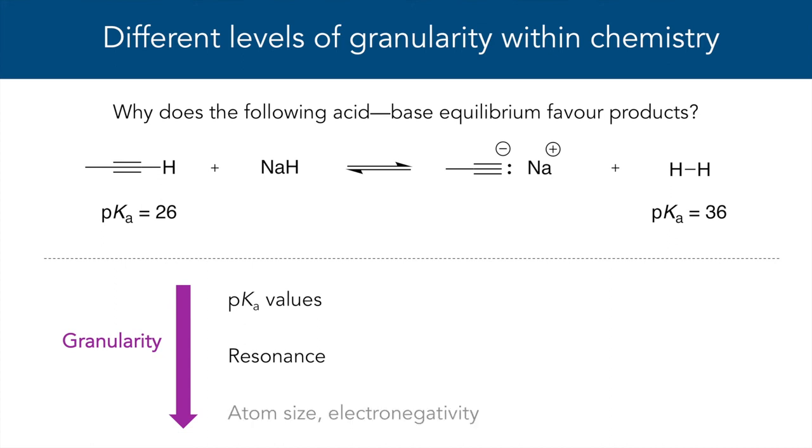In some instances, you could go even deeper, and talk about how atomic properties, such as atom size or the electronegativity of different atoms, might influence your answer. All these explanations are correct, but certain contexts require analysis at a specific level of granularity. So it's going to be important for you to be able to identify and construct arguments at different levels of granularity.